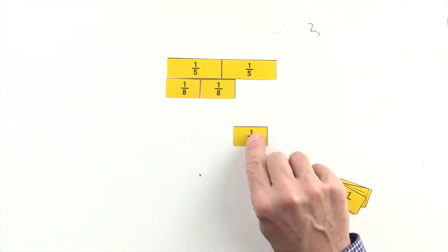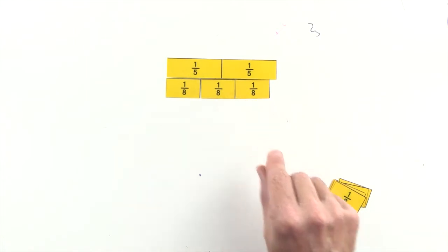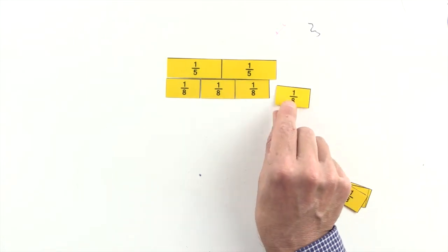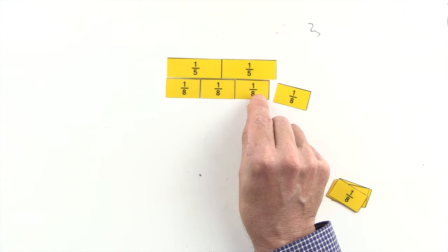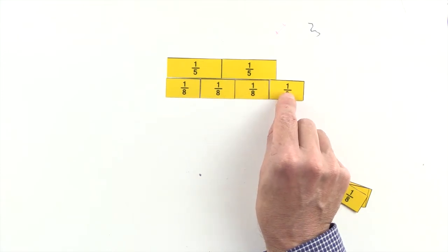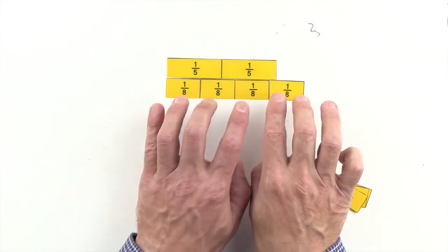Three-eighths are less than two-fifths, and four-eighths are greater than two-fifths, so we can't use eighths to make an equivalent fraction to two-fifths.